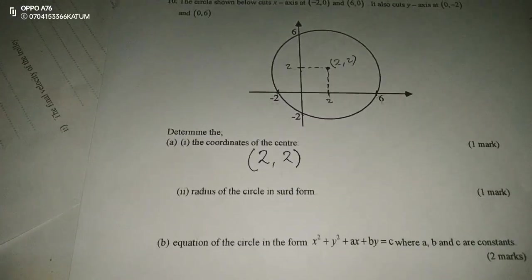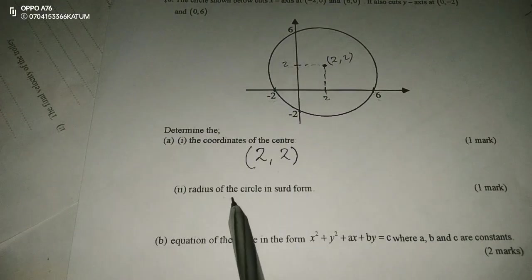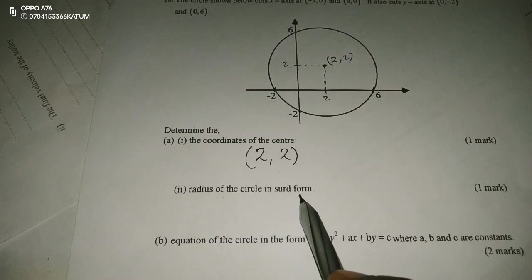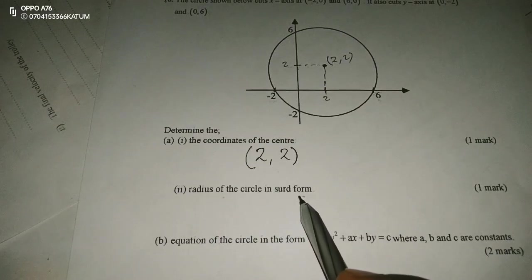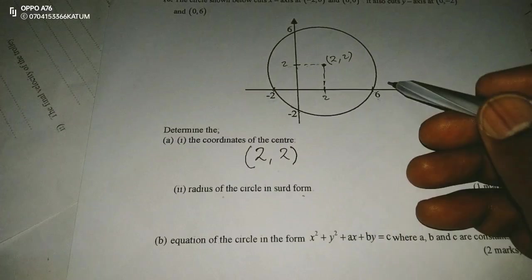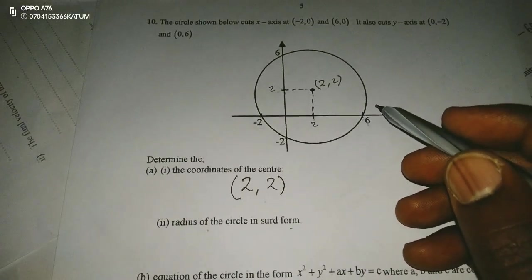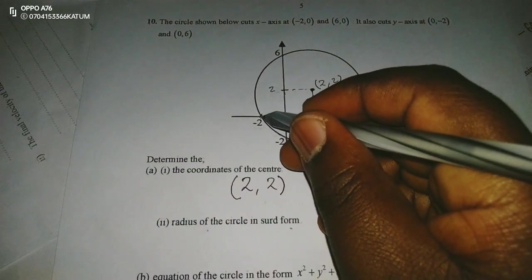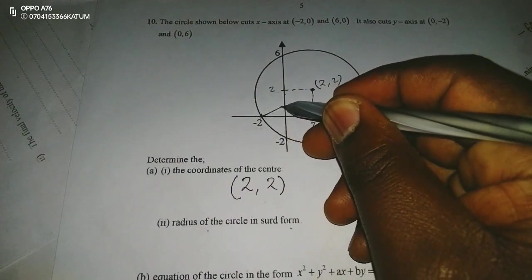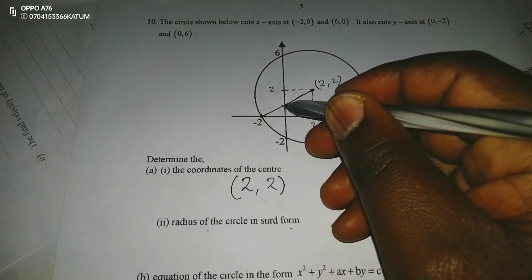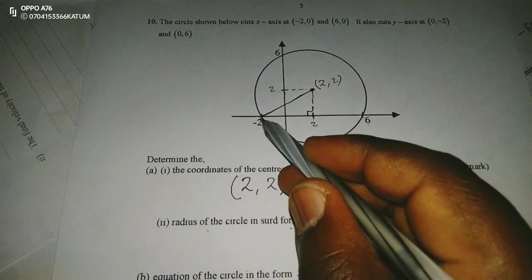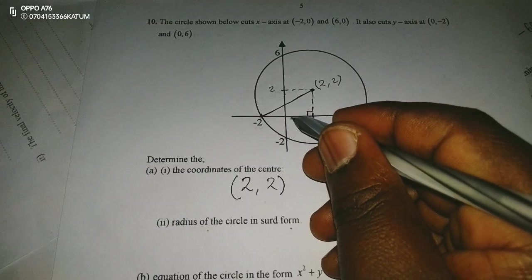The center of this circle is (2, 2). Then now the next is the radius of the circle in surd form. So for us to get the radius of the circle in surd form, let me use a sketch here. We don't know this radius, but at least we know that from -2 to 2, we have 4 units.